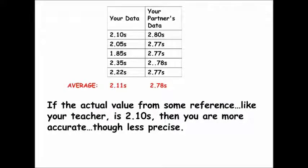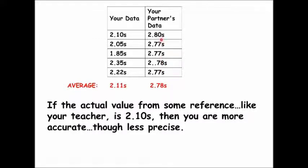If the actual value from your teacher is 2.10 seconds, then you can see that you are more accurate even though your numbers were less precise. Your average of 2.11 seconds comes closer to the teacher's accepted value of 2.10 seconds than your partner's average of 2.78 seconds. So you are more accurate than your partner. However, your partner's measurements are more precise because they're closer together — even though your accuracy is better, you're not as precise.